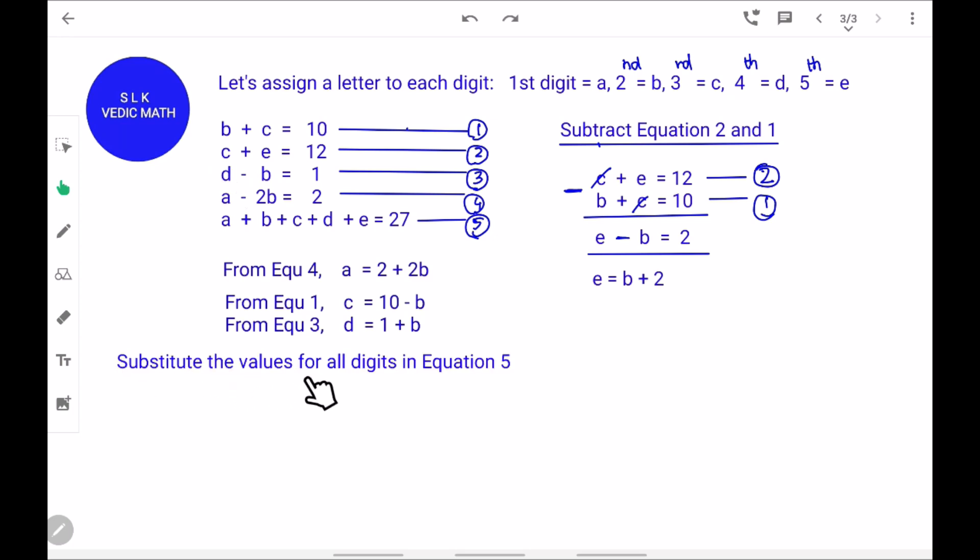Next, substitute the values for all digits in equation 5. We first do for A which is 2 plus 2B, plus B itself, plus C which is 10 minus B, plus D which is 1 plus B, plus E which is 2 plus B equal to 27.